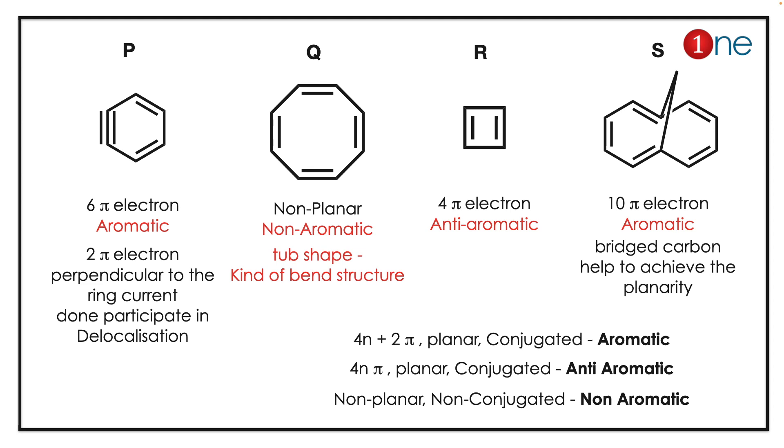Looking at P, Q, R, S - for P you might commit a mistake because it has a double bond. You might consider it non-aromatic, but it is a perfect aromatic system because the pi electrons perpendicular to the ring current plane participate in delocalization. Q is our answer because Q has a tub shape. It is non-planar, so that is our answer - non-aromatic.